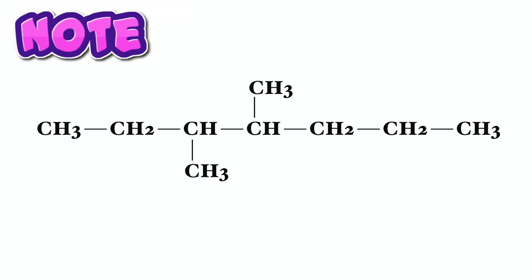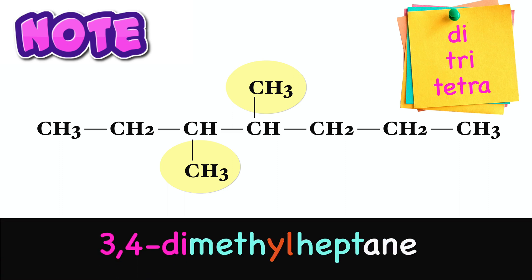Please note, if the same substituent occurs more than once, specify the location of each substituent. Also, the number of the same substituent group is indicated by adding a prefix such as di-, tri-, tetra-, etc. This compound is called 3,4-dimethylheptane.